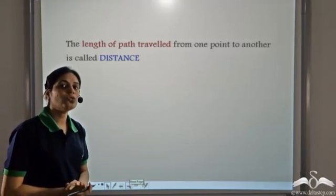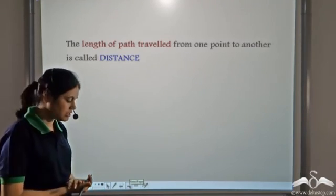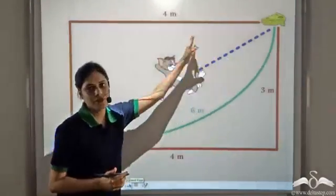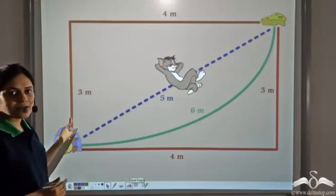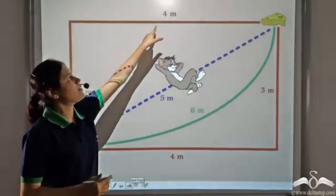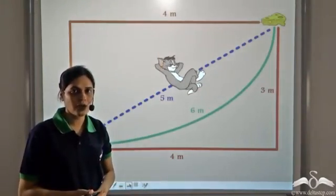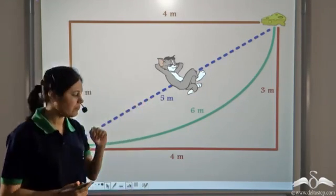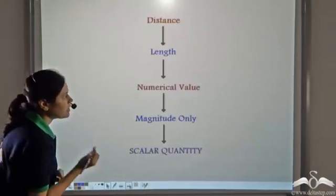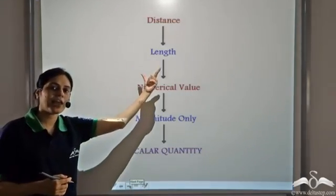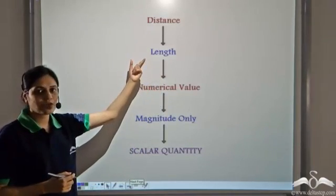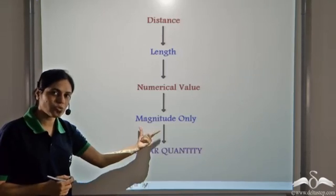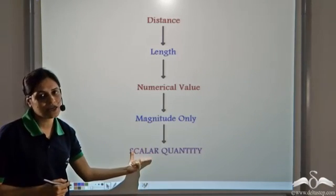So if I ask you what is the distance travelled by Jerry to get to the cheese — we know he took this path and the length of this path is three meters plus four meters, that is seven meters long. So we can say that the distance travelled by Jerry is seven meters. Distance is equal to the length of the path taken. The length of the path taken is a numerical value and it requires only magnitude, and hence distance is a scalar quantity.